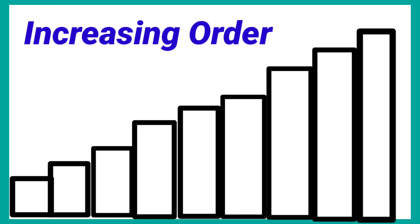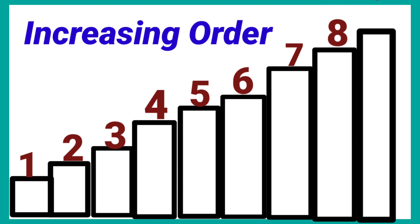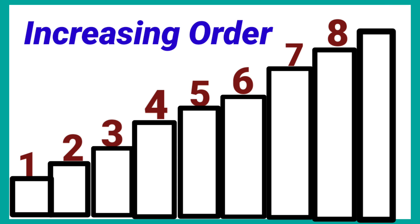Increasing order: 1, 2, 3, 4, 5, 6, 7, 8, 9. In increasing order, numbers came from small to big — first 1, then 2, then 3, then 4, 5, 6, 7, 8, 9. So it is increasing order.